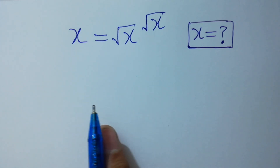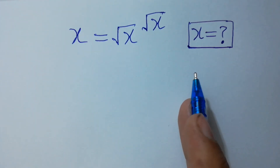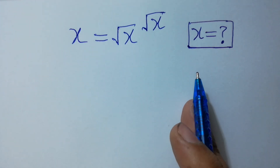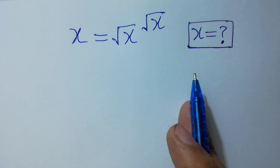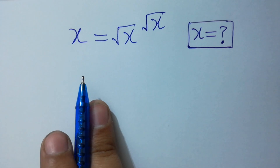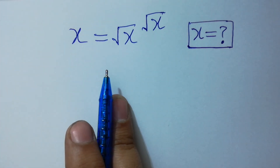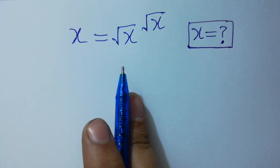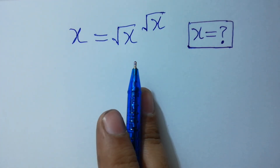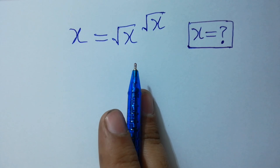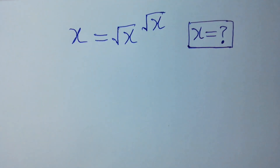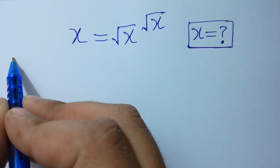Hello friends. Find the value of x if x equals the square root of x to the power square root of x. Let's solve it.